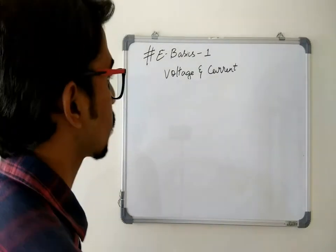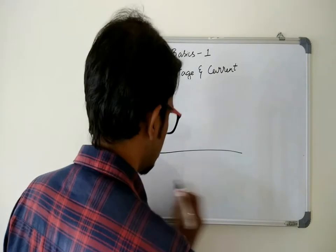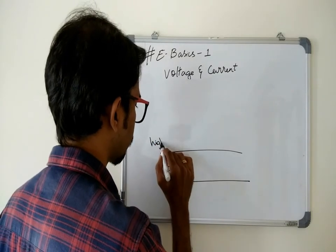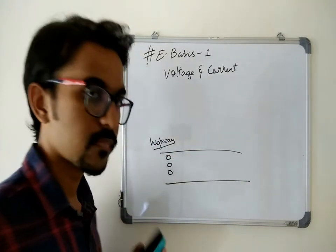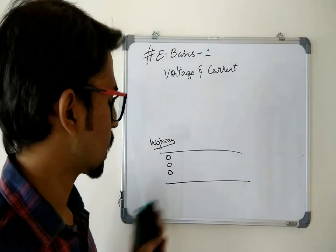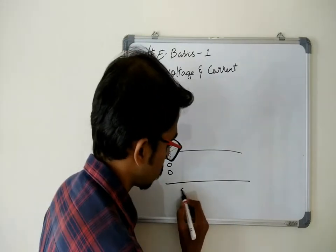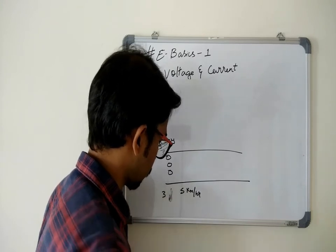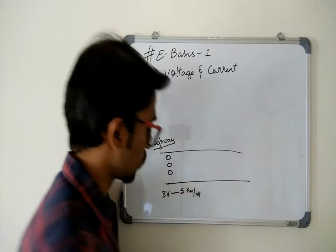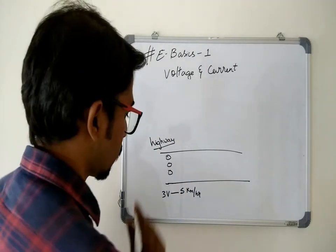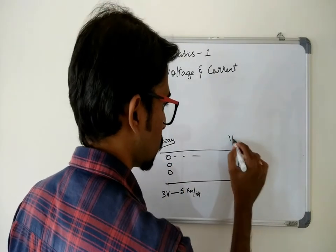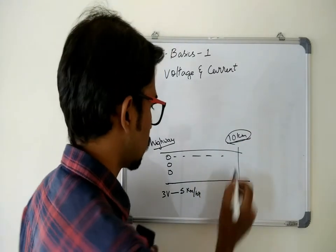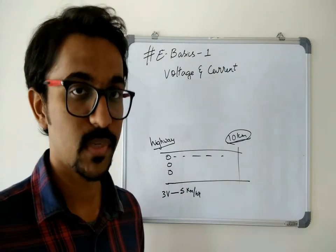So what kills humans? We'll take the same old example of highway. Three vehicles are traveling at five kilometers per hour. Three vehicles traveling a distance of 10 kilometers at five kilometers per hour. Will they die? Is there a chance of accidents happening?